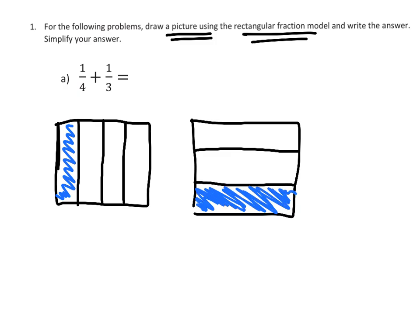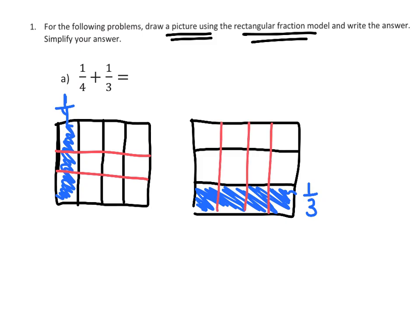Over here we've got 1/4, and here we've got 1/3. To get our common denominators, since this is cut into 4ths and this is cut into 3rds, I'm going to take my 4ths and cut them into 3rds, and I'm going to take my 3rds and cut them into 4ths.